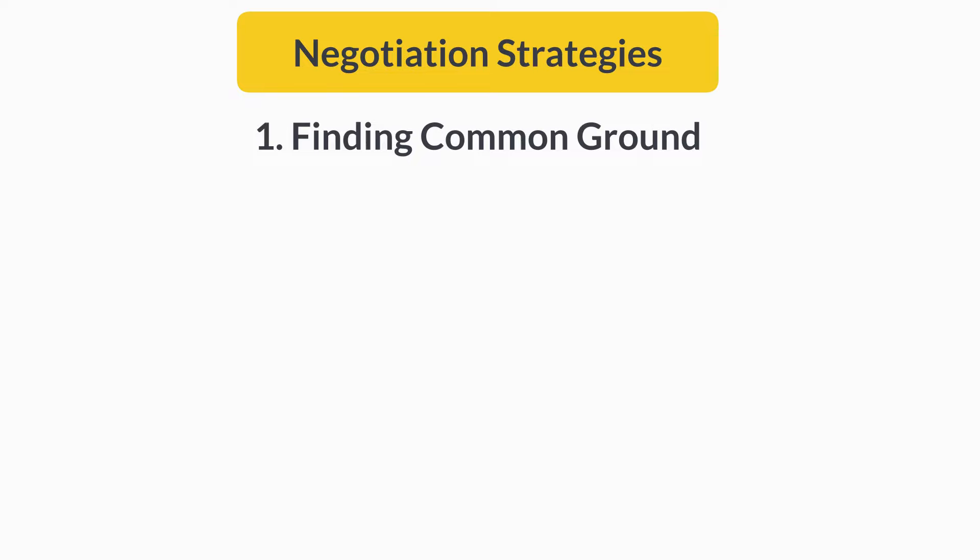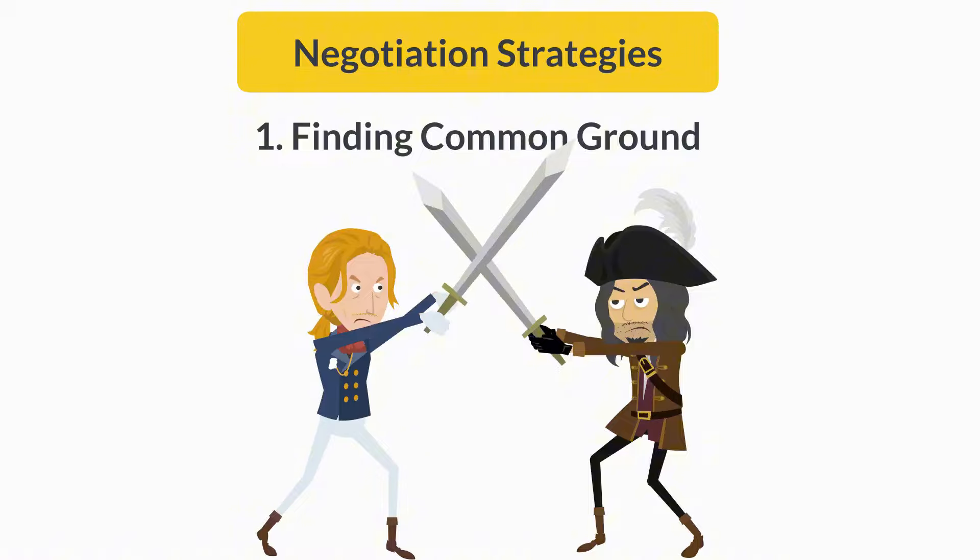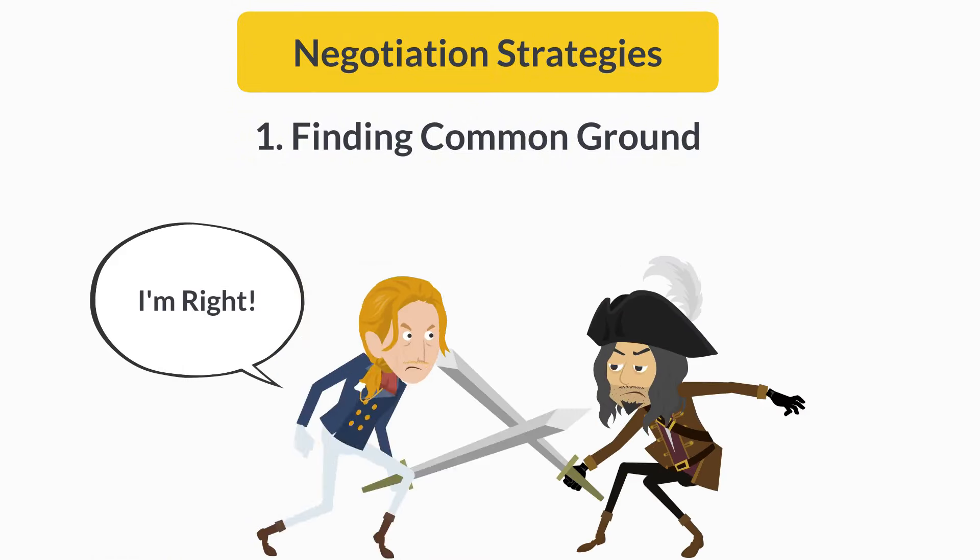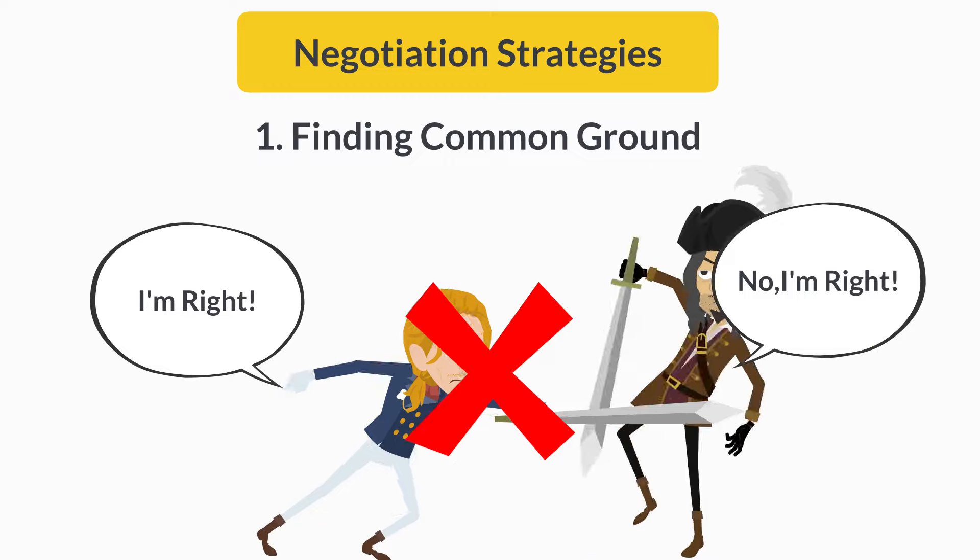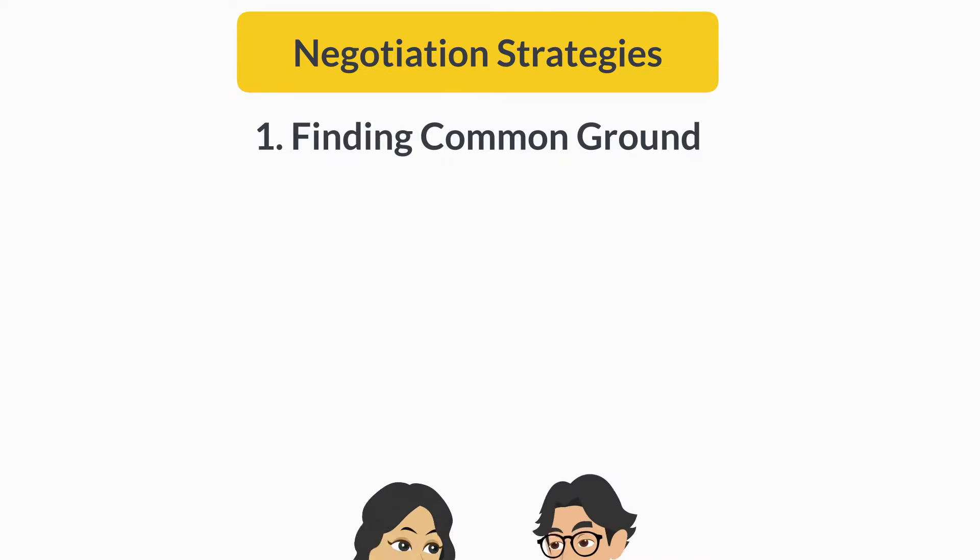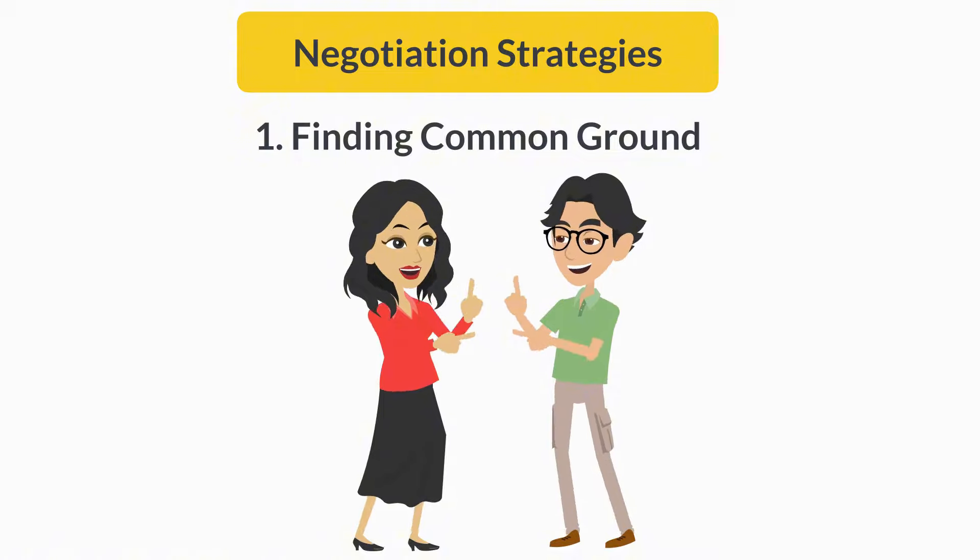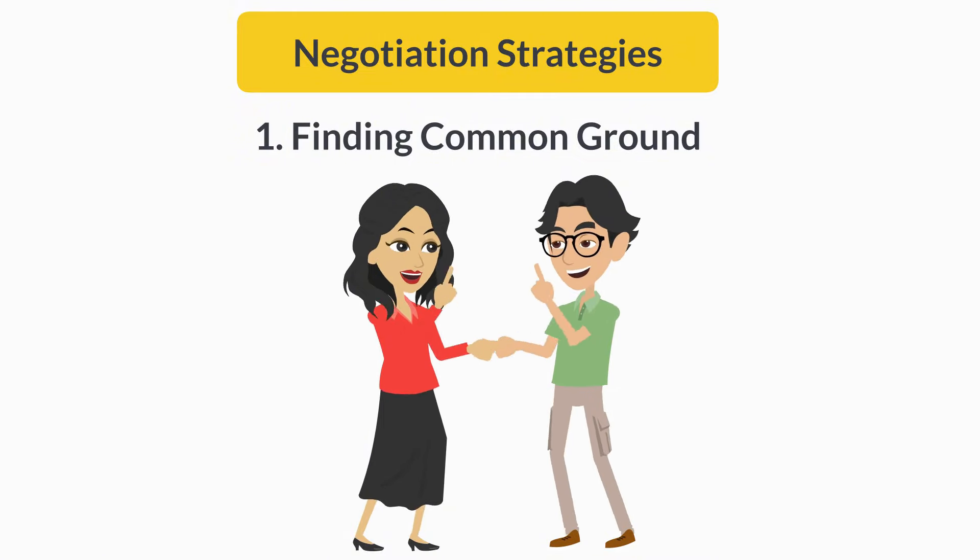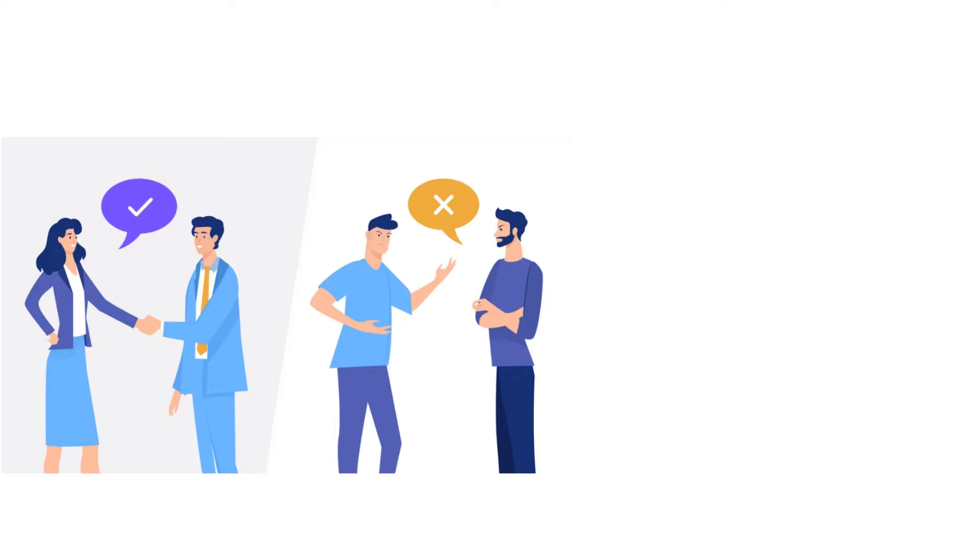One, finding common ground. Most of us approach debates and negotiations like a tug of war, trying to pull the other person to our side by bombarding them with reasons why we're right. However, the best negotiators treat it more like a dance, where they sometimes step back to allow the other person to move forward. Instead of only focusing on why they're right and the other person is wrong, they also highlight areas where they can agree.